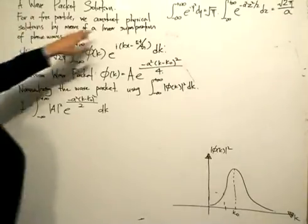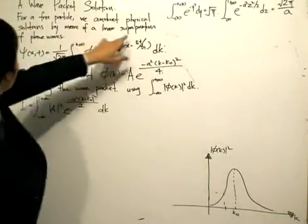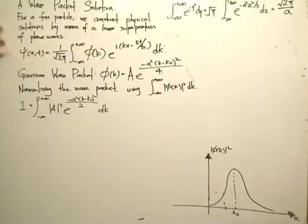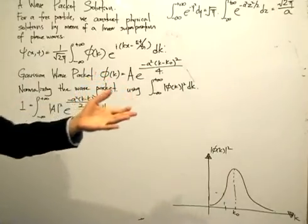So for a free particle, we can construct physical solutions by means of a linear superposition of plane waves. And it's otherwise known as a Fourier transform, as I also mentioned.